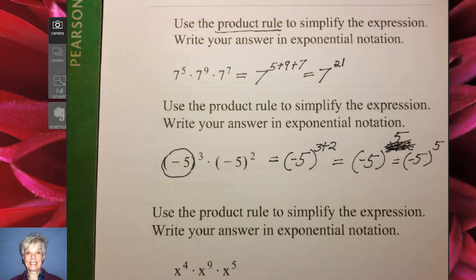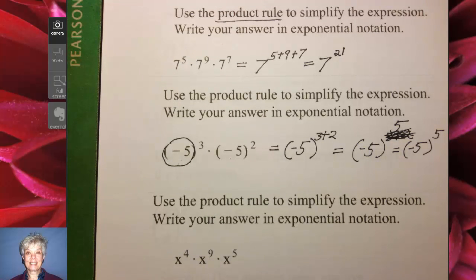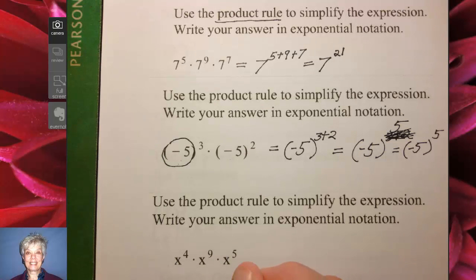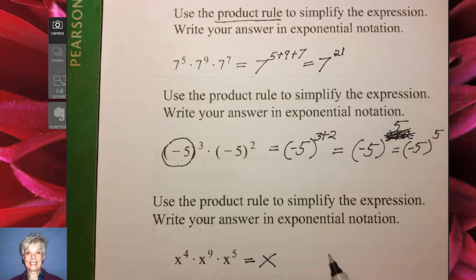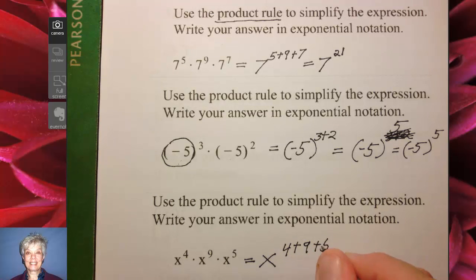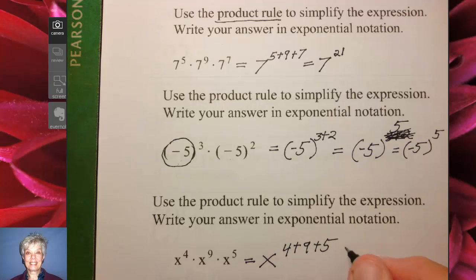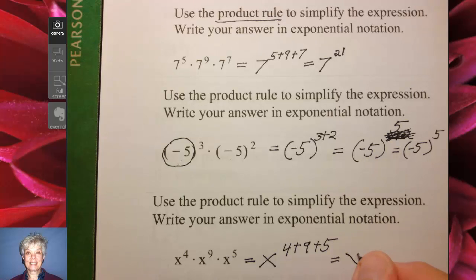Now here we have another chance to use the product rule and to give our answer in exponential notation. What is the base? The base is x, x, x — all the same base. So I write the base and then I add the exponents: 4 plus 9 plus 5. 4 plus 9 is 13; 13 plus 5 is 18. So our answer will be x to the 18th power.